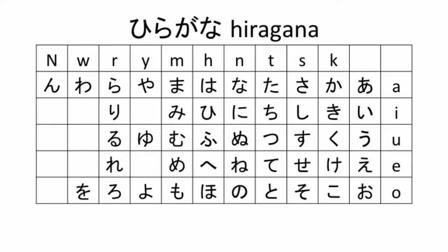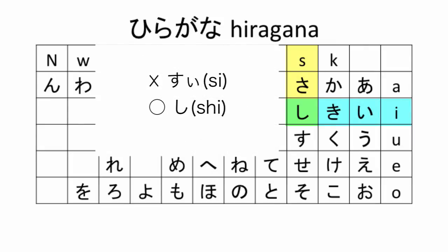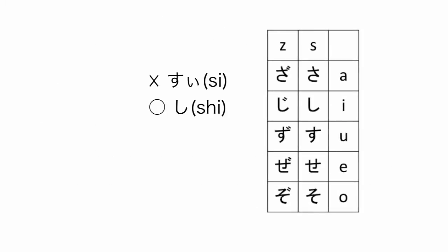Remember from the 46 basic sounds of Japanese we learned that for the combination of S and I, we pronounce it as し instead of すい. This is also the same for the combination of Z and I.